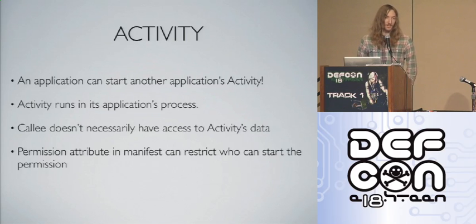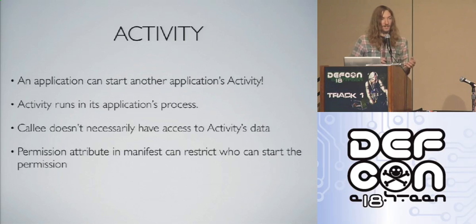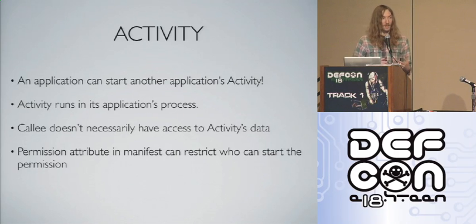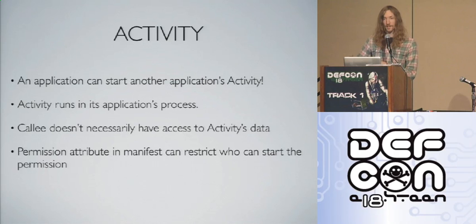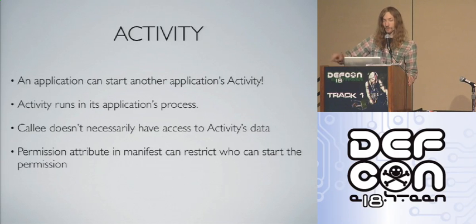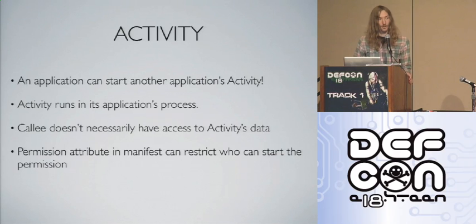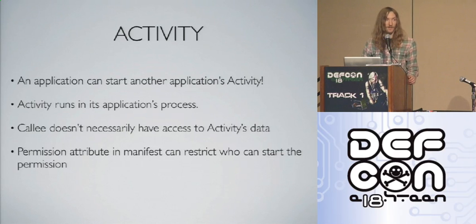Applications can also start other applications' activities remotely. The activity runs within the process of the remote application. For example, if you've requested location permissions and want the user to turn on their GPS, you can start the settings activity with location settings. Since it runs in the remote application's process, the caller won't have access to that activity's data. Activities can also have permissions enforced on them so other processes can't start them without the required permission.